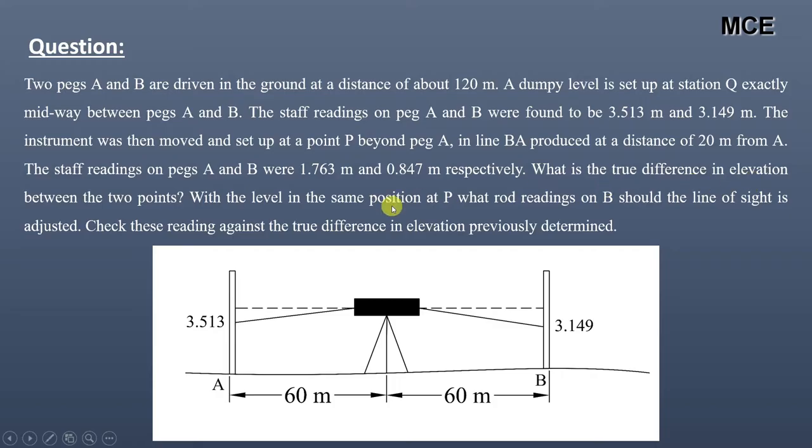What is the true difference in elevation between the two points? With the level in the same position at P, what rod readings on B should the line of sight be adjusted? Check these readings against the true difference in elevation previously determined.